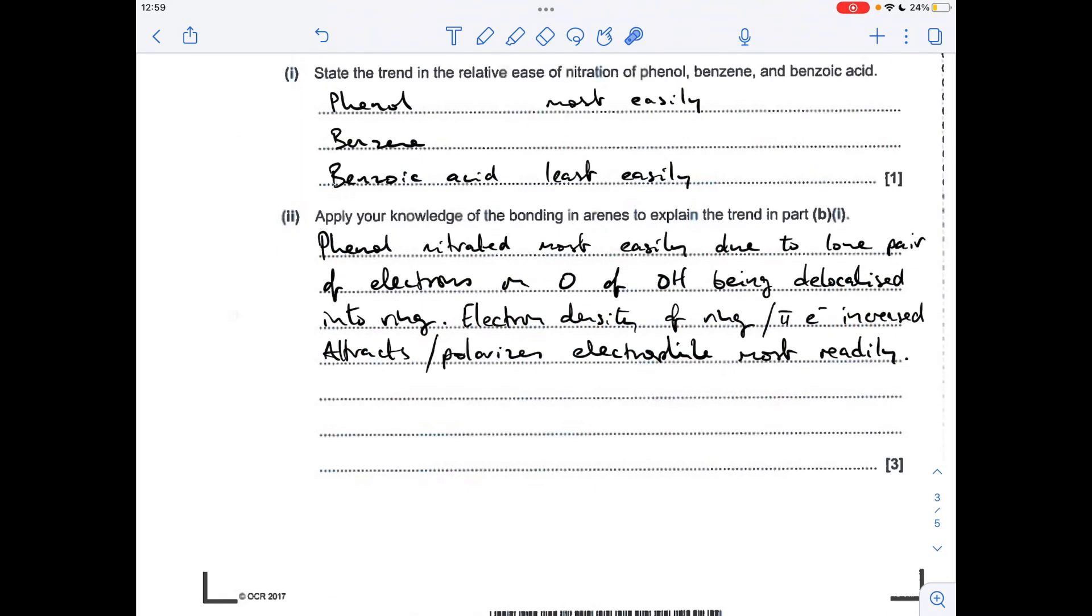For the explanation of the trend, I'm only going to talk about the extremes, starting with phenol. Why is that nitrated most easily? Because there's a lone pair of electrons on the oxygen of the hydroxyl group that gets delocalised into the ring. This increases the electron density, or the pi electron density, and therefore it will attract or polarise electrophiles more readily.